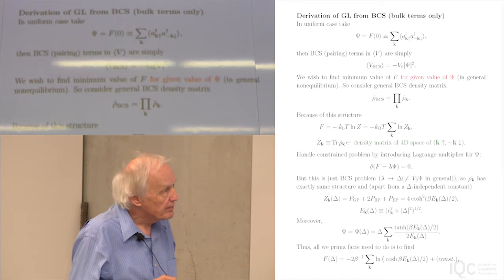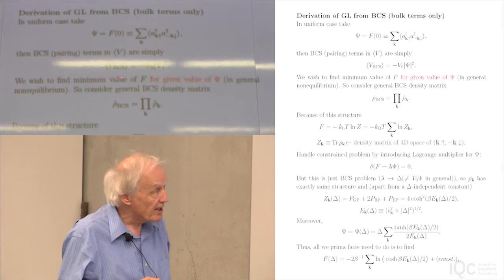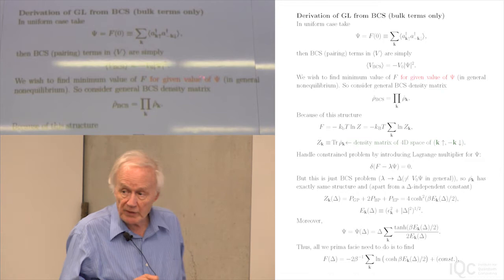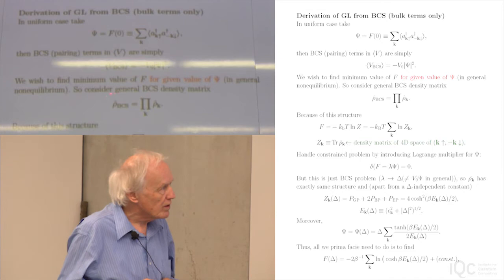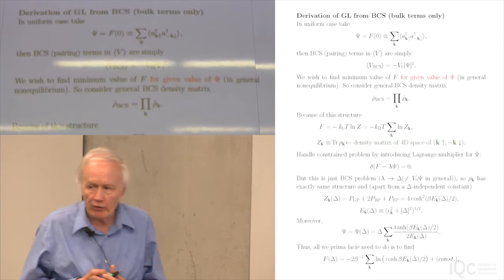What's not so straightforward is the other part of the problem. We want to find the minimum value of F. Remember that what Ginzburg and Landau do is to write down the free energy as a function of psi. So we want to calculate the minimum value of F for a given value of psi, which in general will be a non-equilibrium value. Before going to the actual situation closest to Ginzburg-Landau — which is close to Tc — let's look at this problem a little more generally.